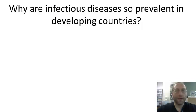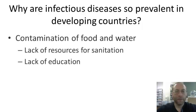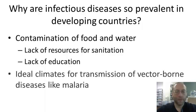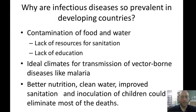So why are infectious diseases so prevalent in developing countries? One reason is the contamination of food and water, which has to do with a lack of resources for sanitation and also a lack of education. Also due to the ideal climates for vector-borne diseases like malaria — vector-borne means that a vector, like a mosquito, is what's carrying it. The way to improve this is through better nutrition, clean water, improved sanitation such as treating sewage, and vaccinating children.